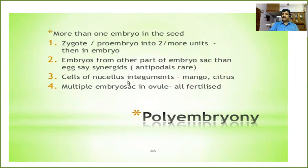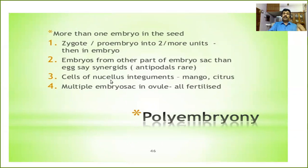In some cases, embryos may form from other parts of the embryo sac — maybe the synergids. The embryo development from antipodal cells is rare. Third, the cells of the nucellus or integuments may be converted into embryo. In the case of mango and citrus, the nucellar cells present around the embryo sac may protrude inside the embryo sac or female gametophyte.